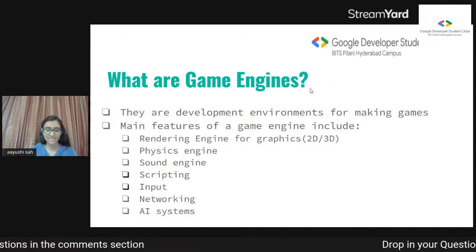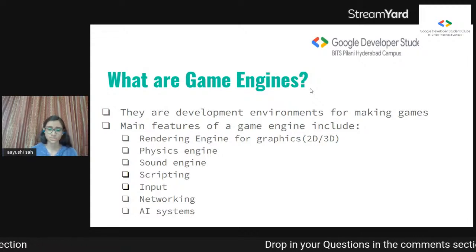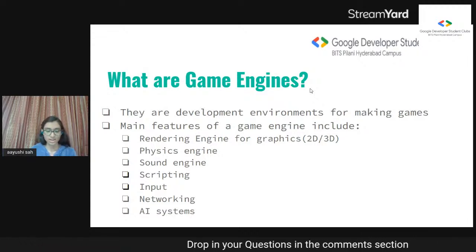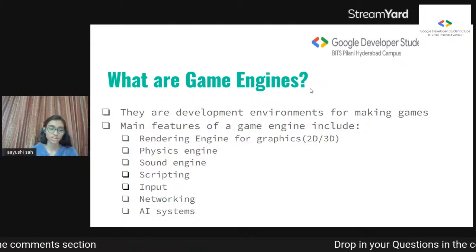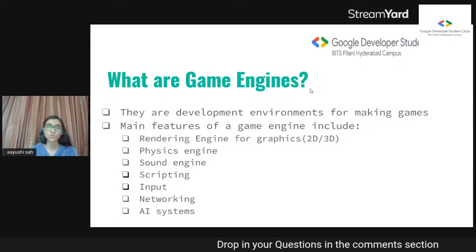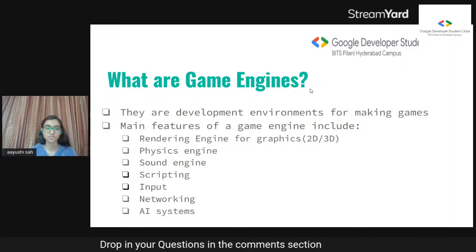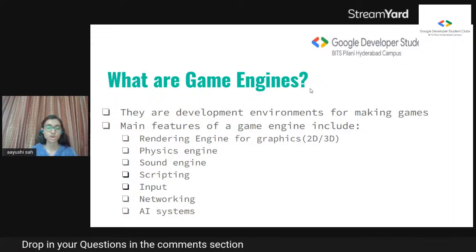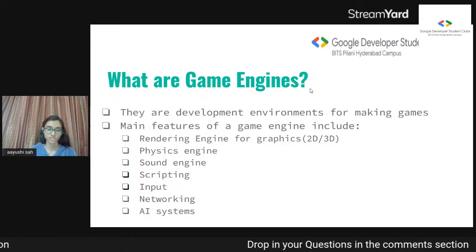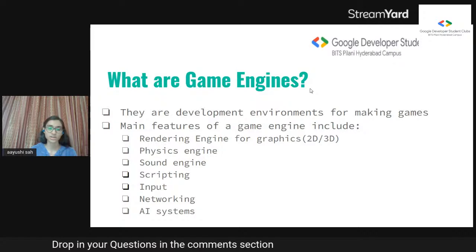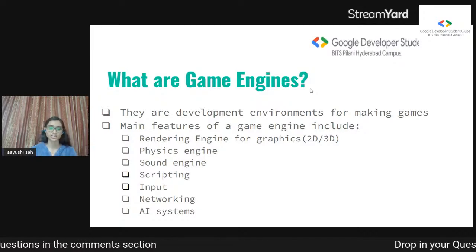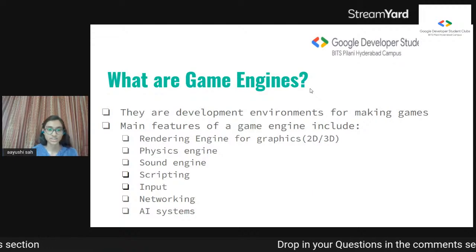Game engines are basically integrated development environments for making games. They have a ready-made suite of visual development tools and software components that you can keep reusing. They do the work for you — they're like a black box. If you're familiar with the OOP concept of abstraction: they cover all the complexities and just show you the important features. That's what a game engine is — it simplifies your work and makes your life so much easier.